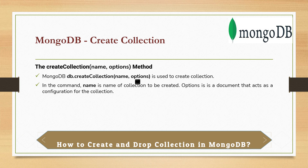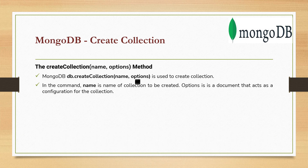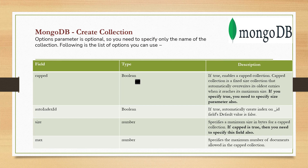To create a collection, you need to use the method called createCollection. First, you select the database, then issue the createCollection method. The first parameter is the collection name, which is mandatory. The second parameter is options, which is completely optional. Options is a document that acts as configuration for the collection.